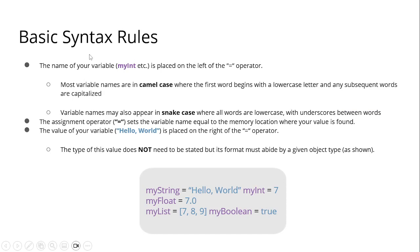Next we go to our basic syntax rules. The name of your variable — myint, etc. — is placed on the left of the equal operator. We have: my_string is a string, my_int is 7 — a number without decimal, my_float is a number with a decimal point such as 7.0, and my_list is an array like 7, 8, 9.